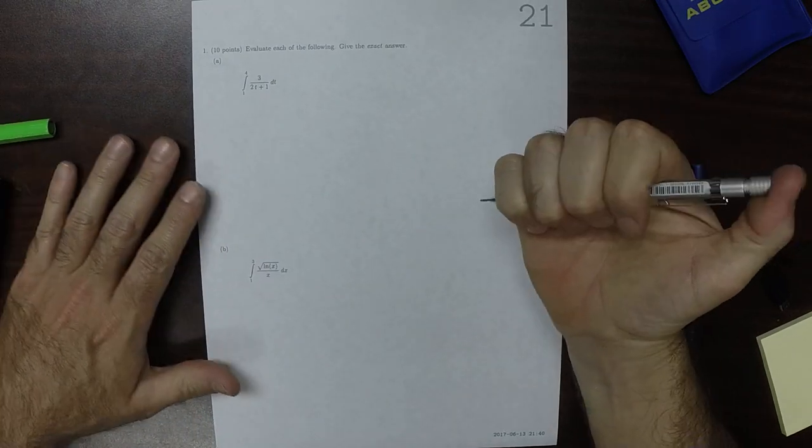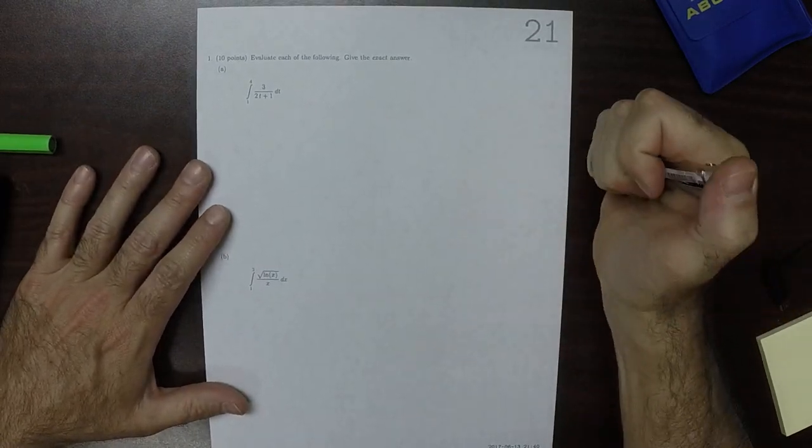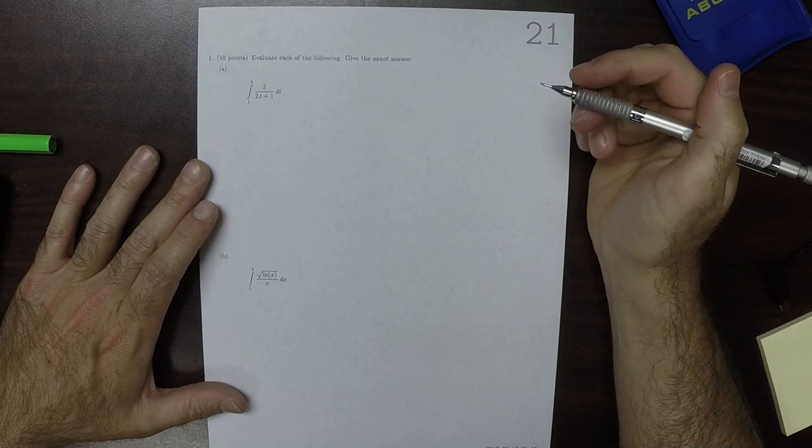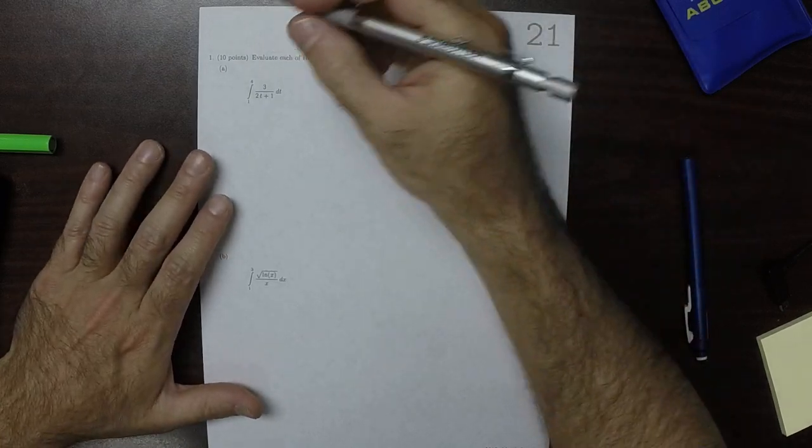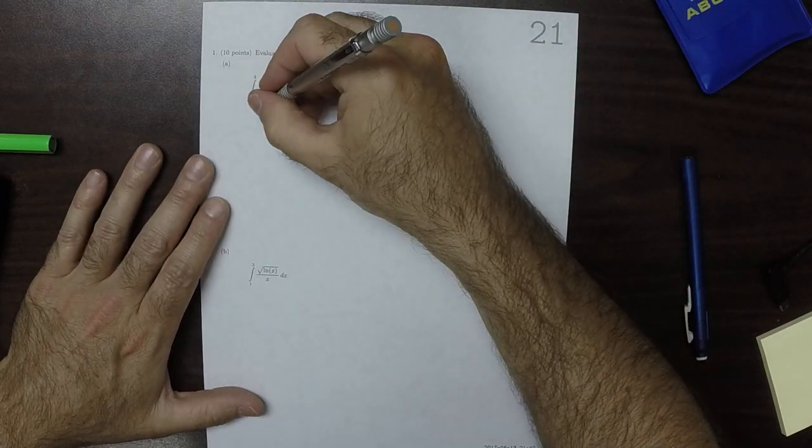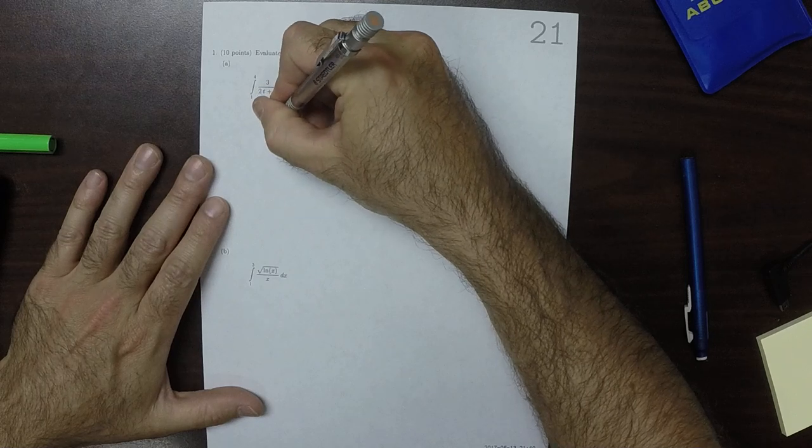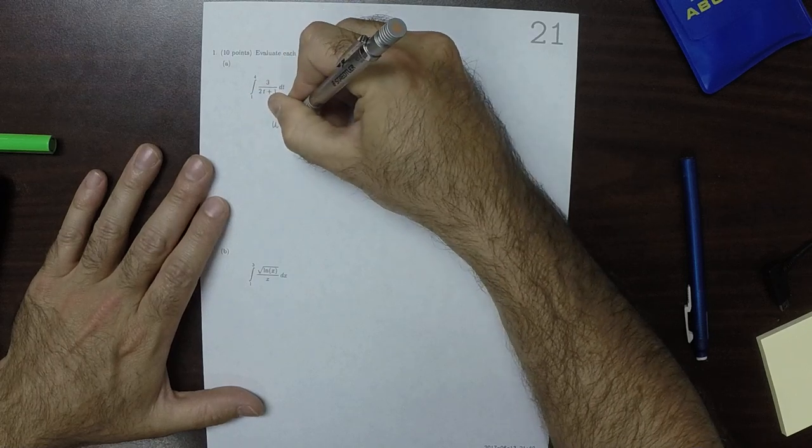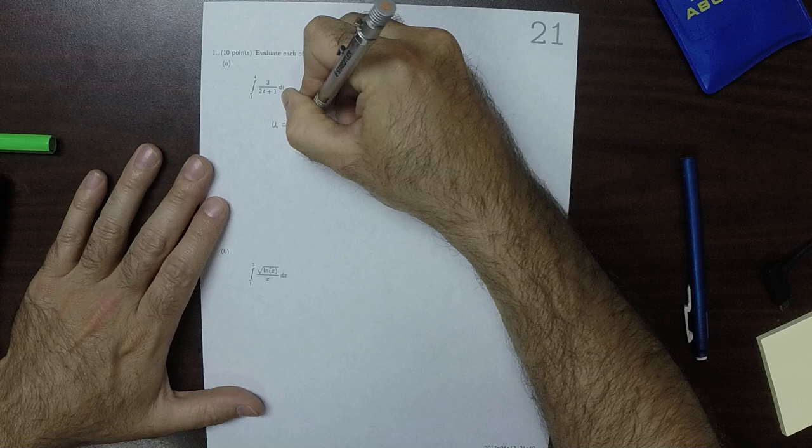This is the solution to written homework 21. So I'll do the substitution. U is 2t plus 1.